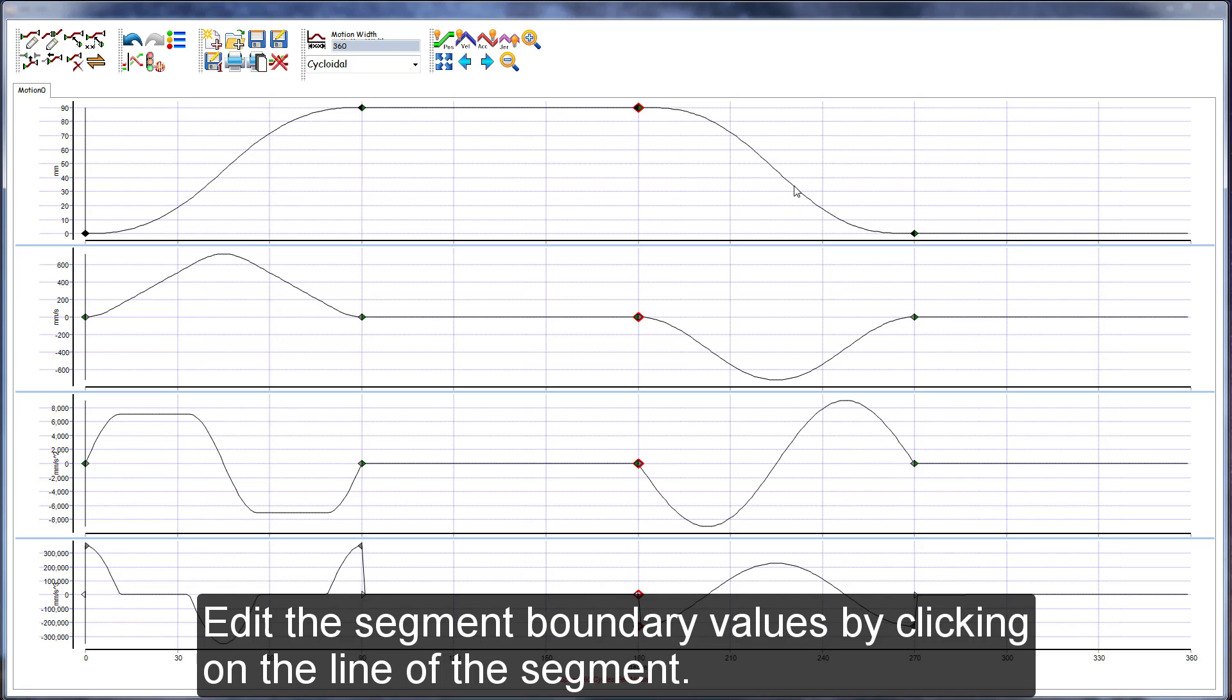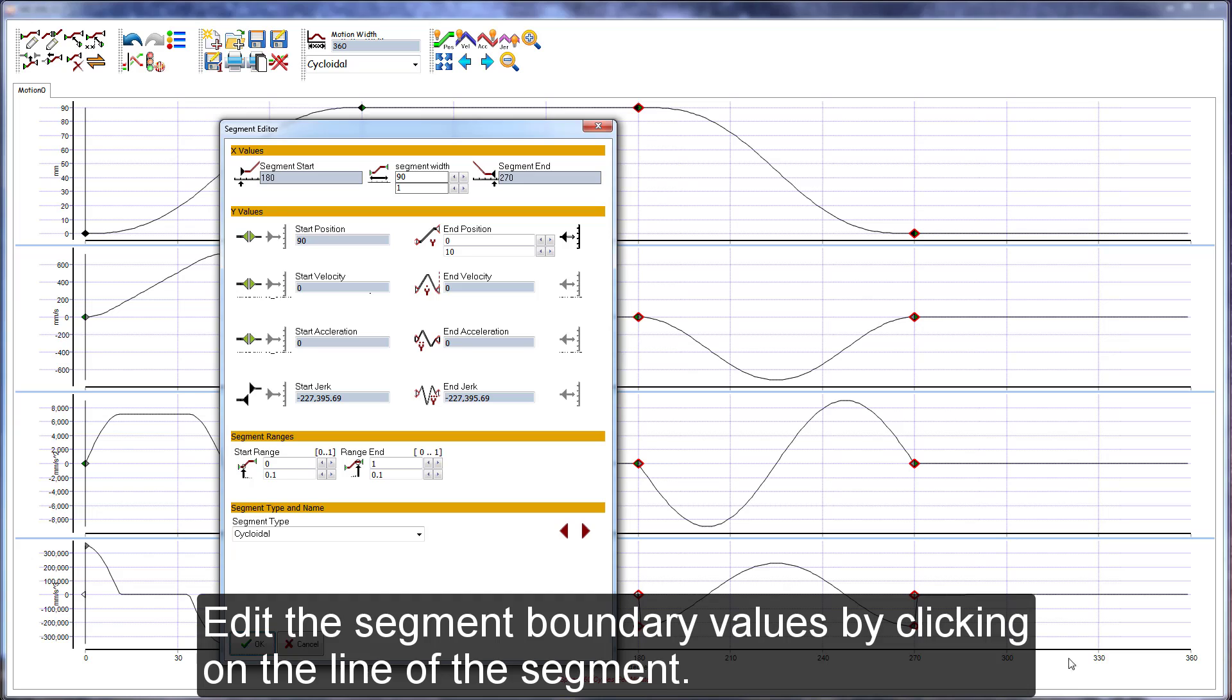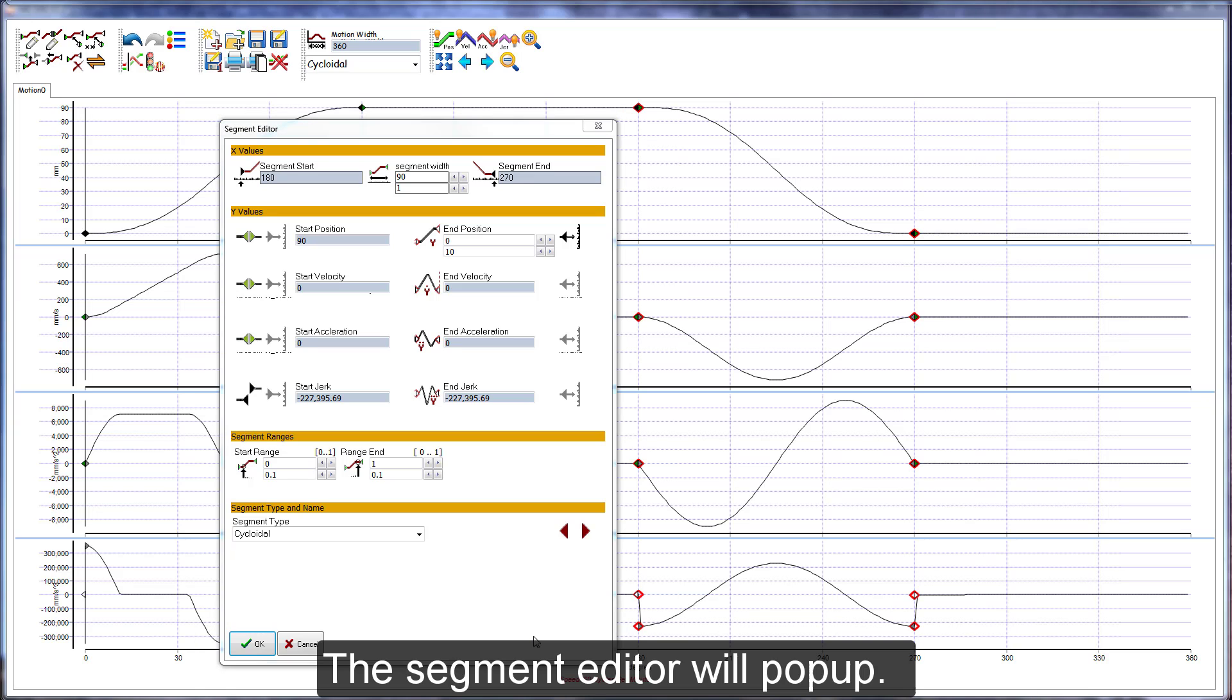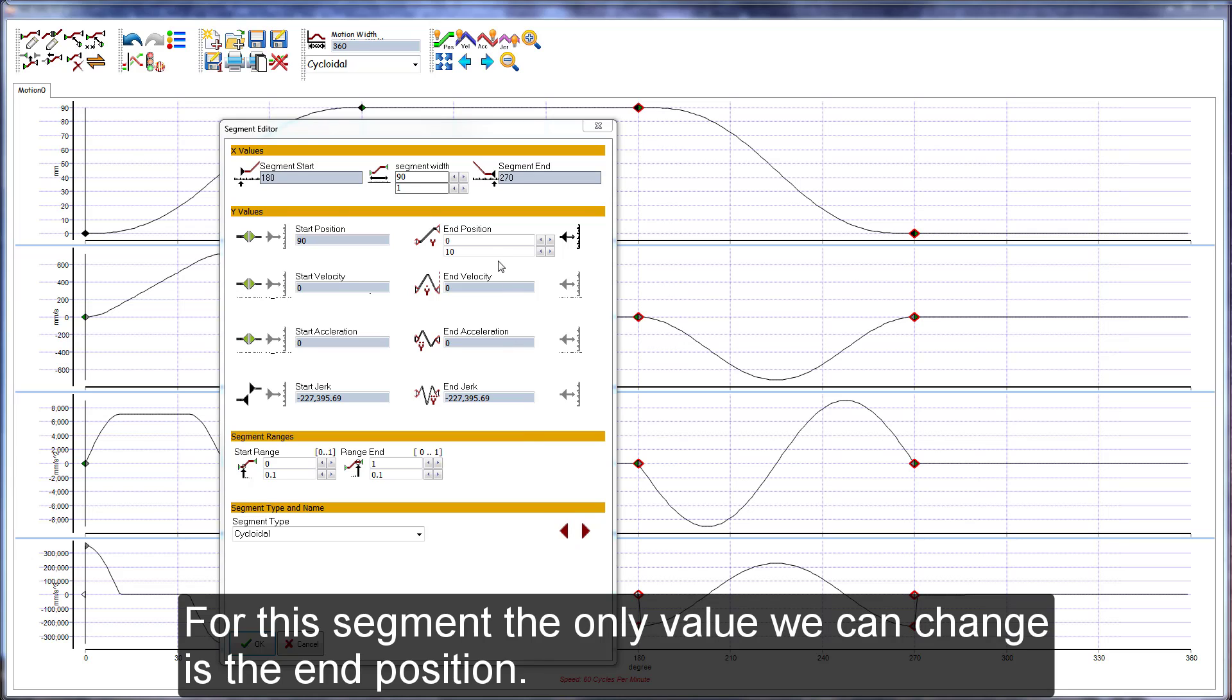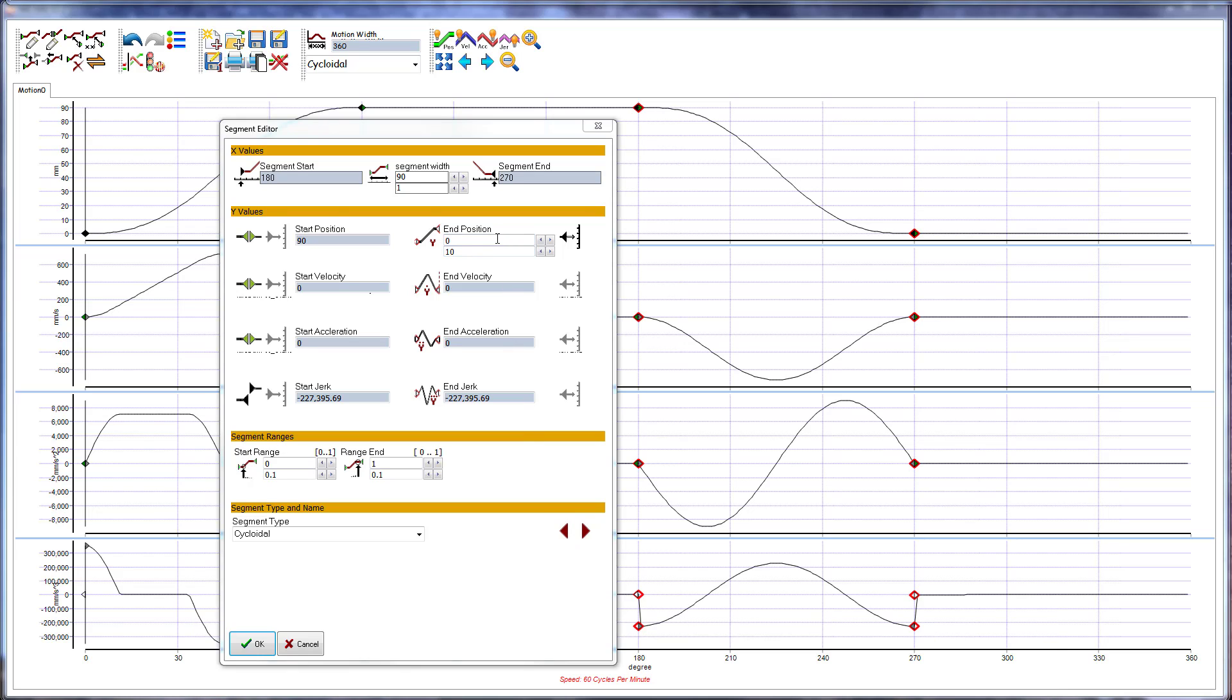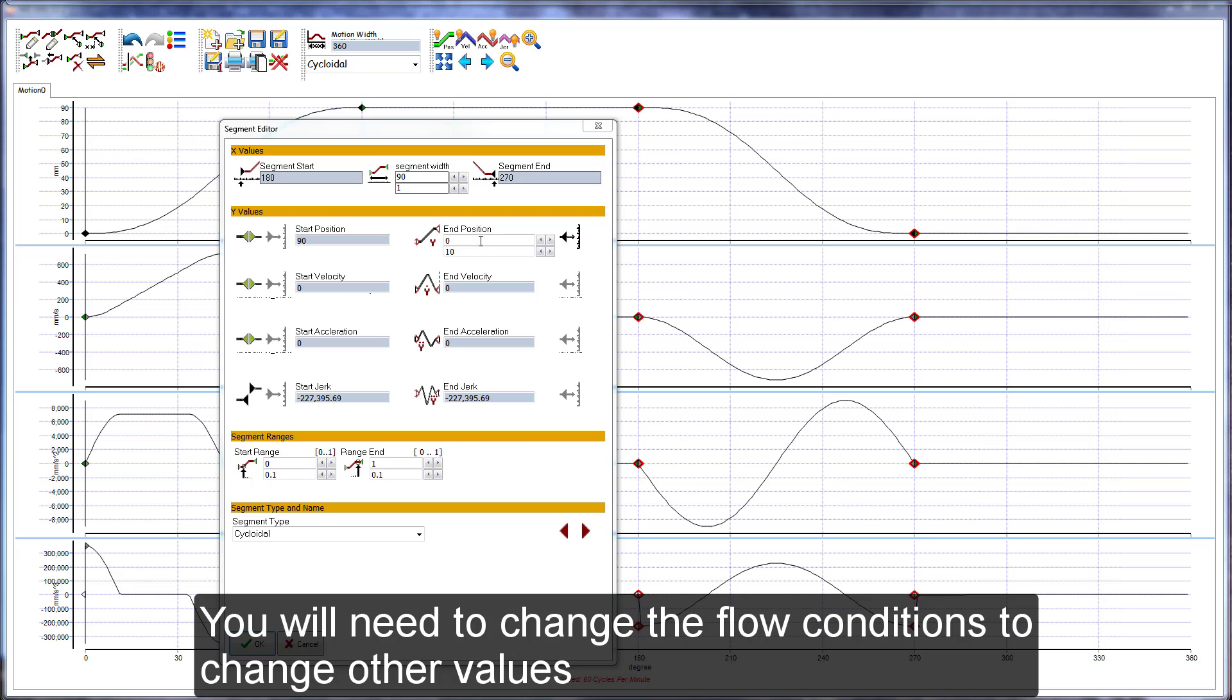Edit the segment boundary values by clicking on the line of the segment. In this segment, the only value we can change is the end position. To change other values, you will need to change the flow conditions.